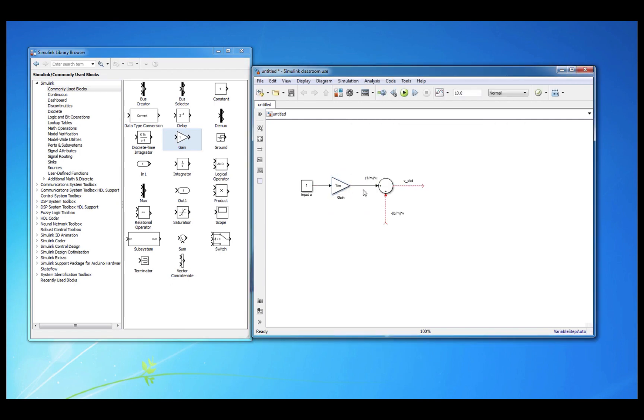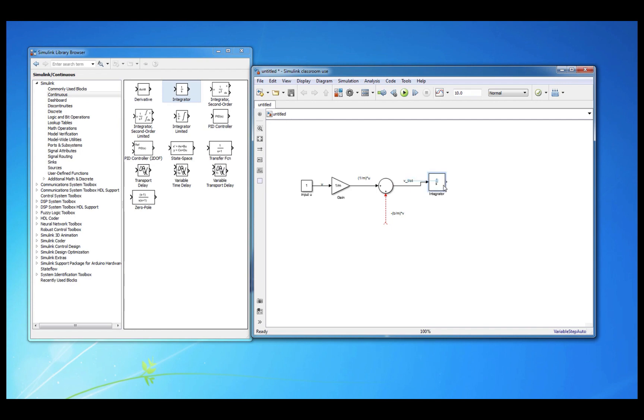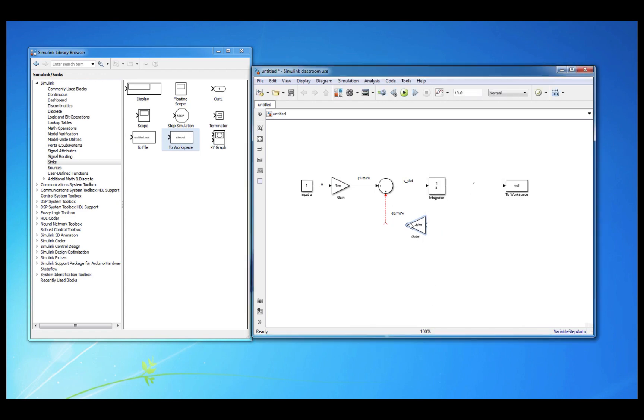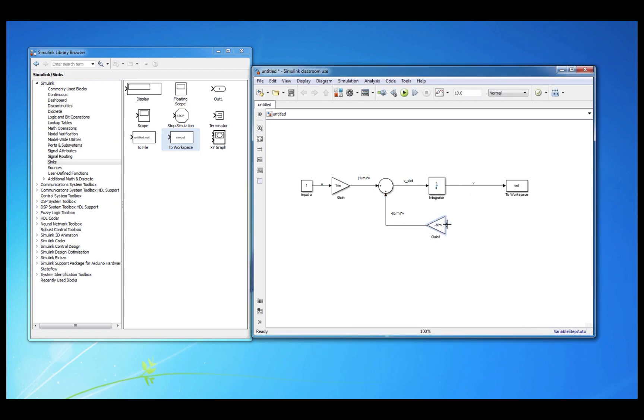Remember, you'll need key blocks like the summing junction, the gain block, the integrator, an input from the sources submenu, and a To Workspace block from the sinks menu. One other thing to note is that if you need to pick off a signal, like the velocity signal in this case, you can either start at the termination point and drag the signal back to the desired pickoff location, or you can hold Ctrl and click and drag starting at the desired pickoff location.